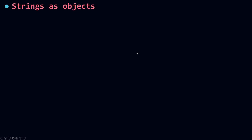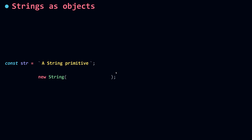First, let's talk about how to create a string in JavaScript. To create a string you need to use double quotes, single quotes, or backticks, then your string value, and you can assign this to a constant or variable. You can also create a string using the String object or constructor with the new keyword, passing your string value inside the parentheses, and assign it to a constant or variable.